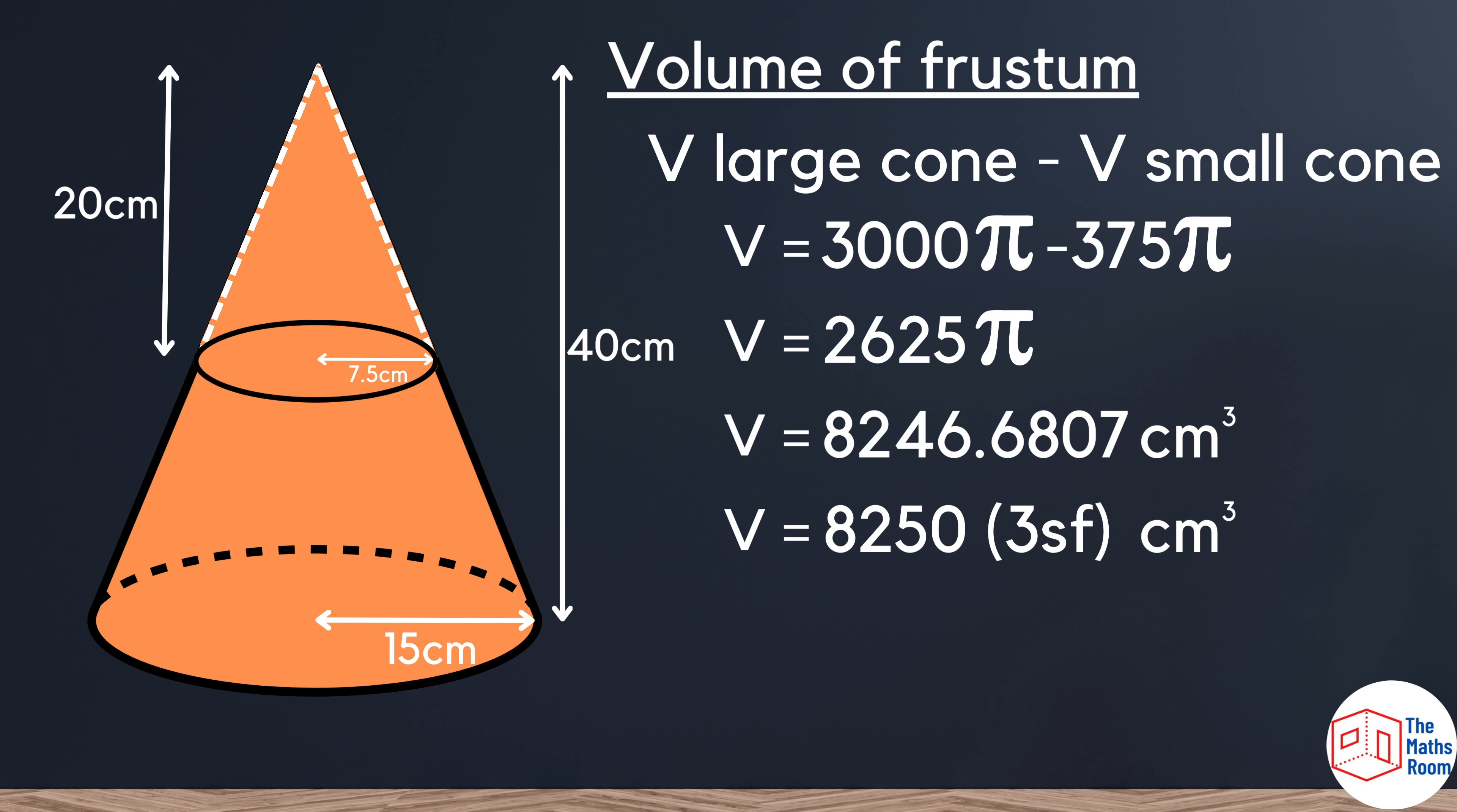But remember the original question asked us to give it to three significant figures. So we've got 8, 2, 4 as our first three significant figures, which we need to look to the number to the right and round off, giving us 8250 cm³.